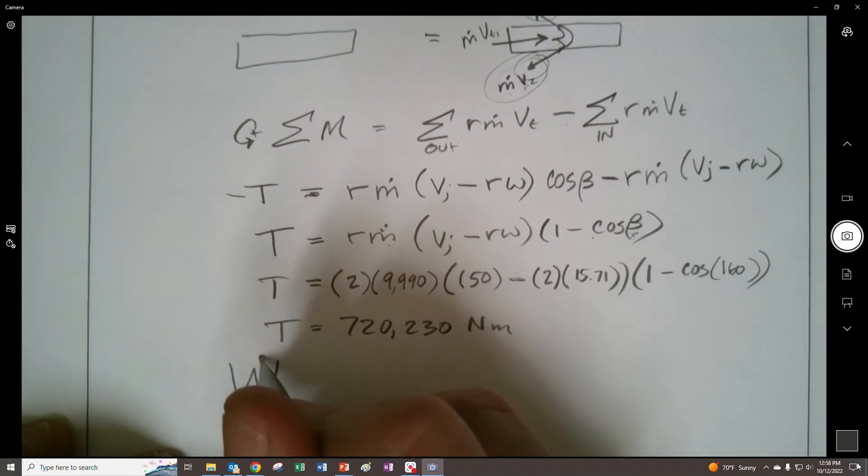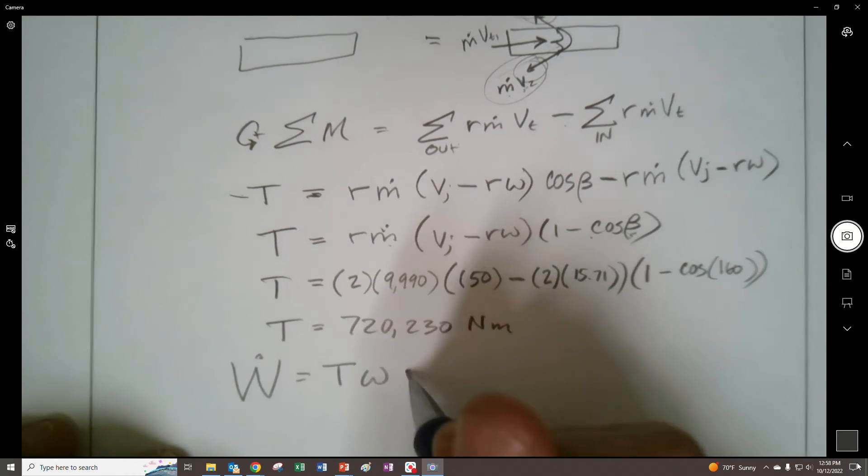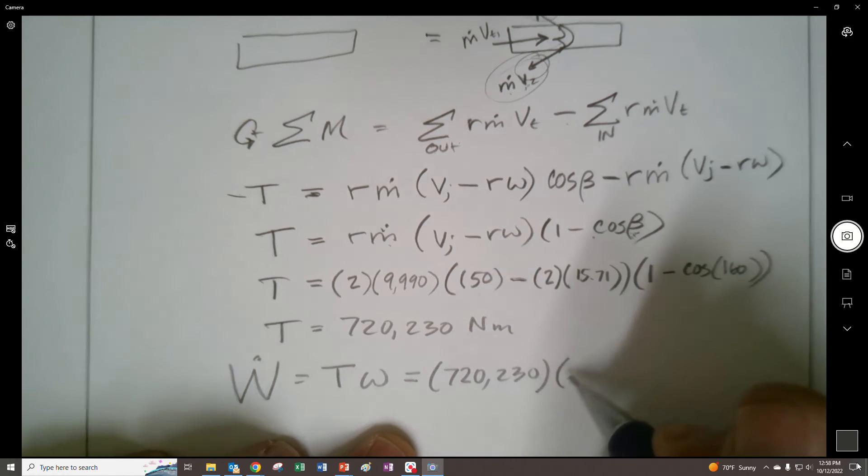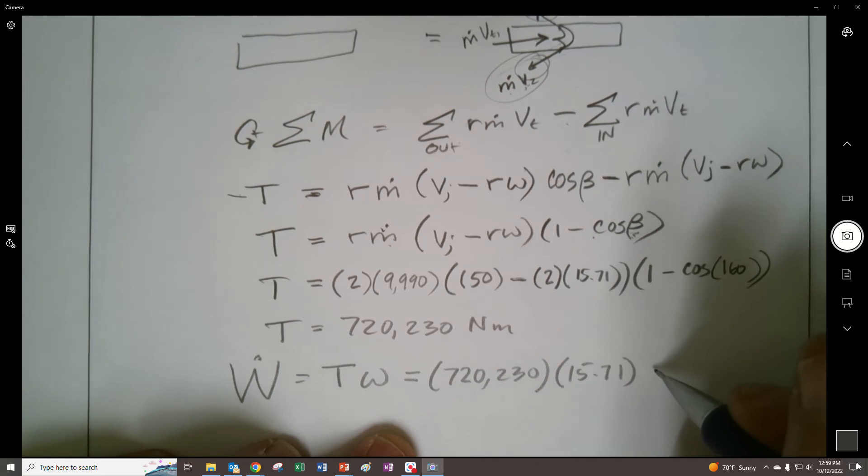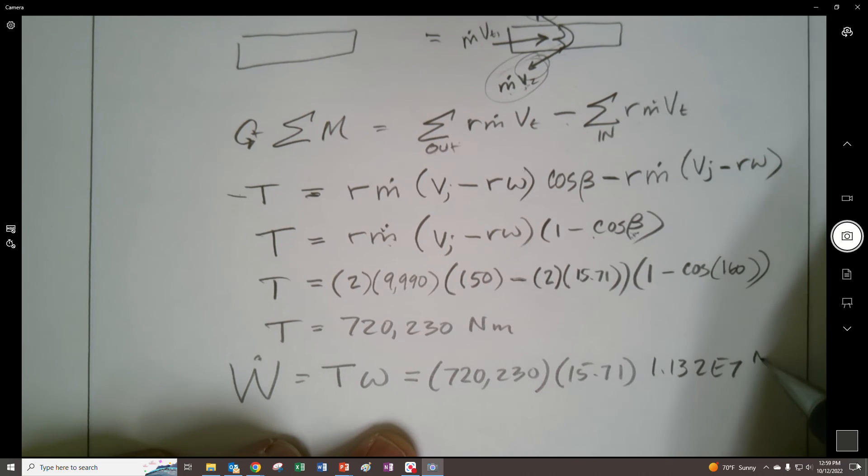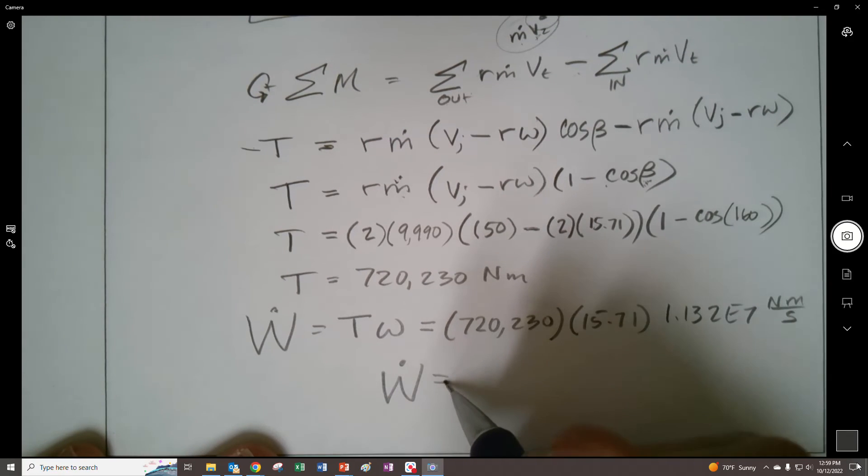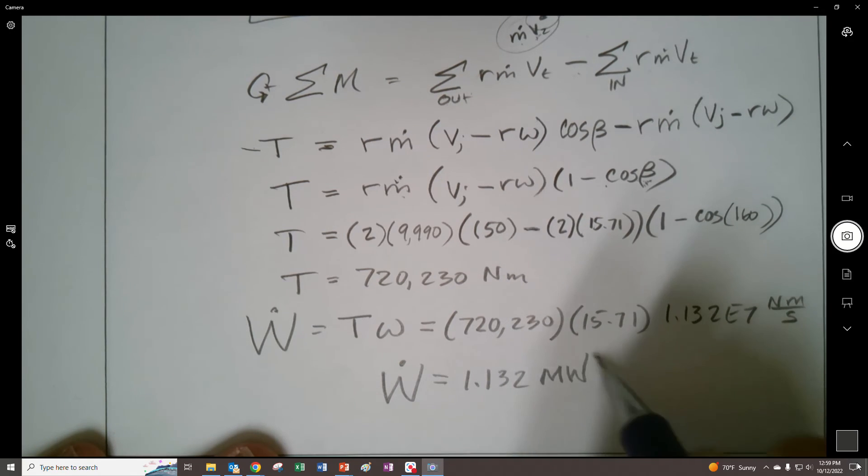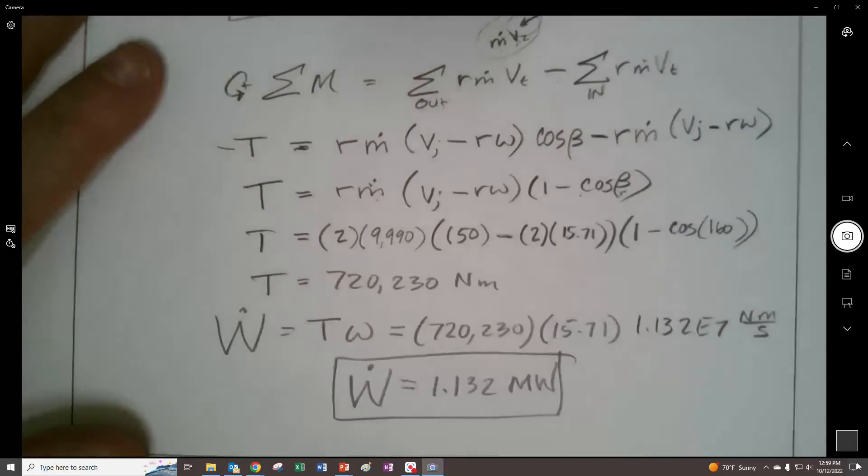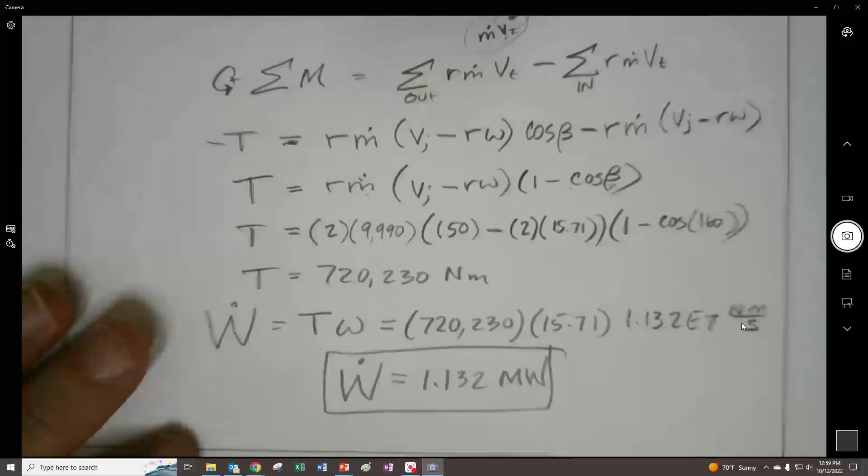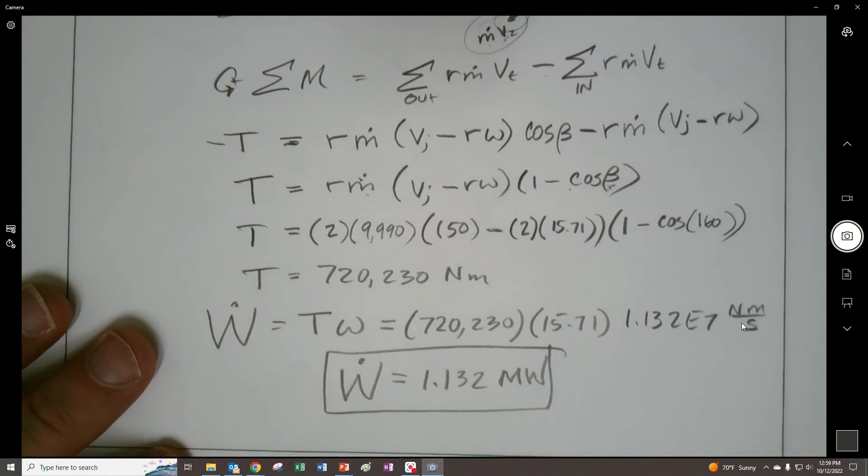Now if we want the power that's out of it, we had torque times angular velocity, 720,230 times our 15.71. And we're ending up with 1.132E7 newton meters per second. So we could say that the extracted power that's possible is 1.132 megawatts. Let me take a second and pause the video and see what I might've missed with that omega. I don't think that omega belongs in there.